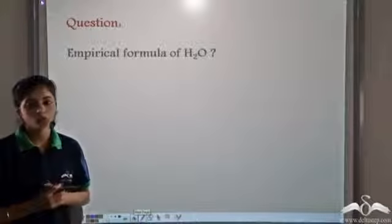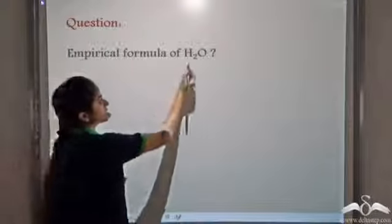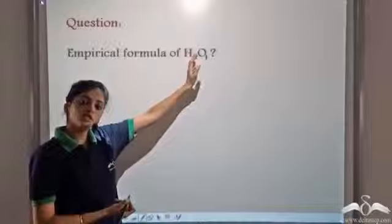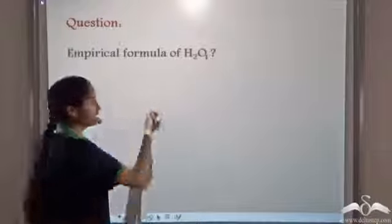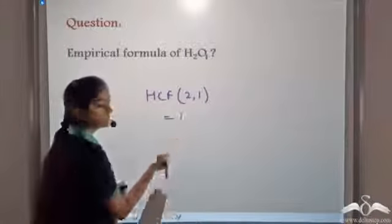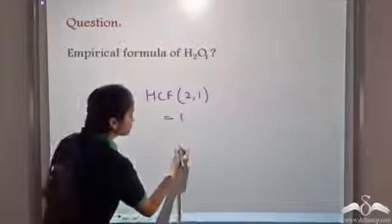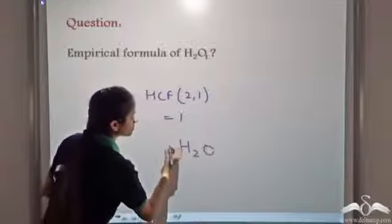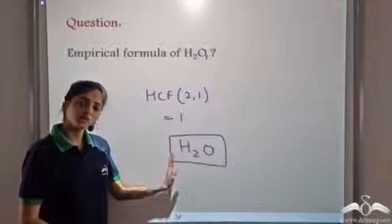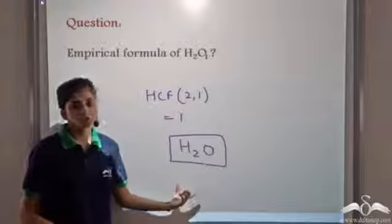What is the empirical formula of water, H2O? There are 2 hydrogen atoms and 1 oxygen atom. The HCF of 2 and 1 is 1, so dividing each by 1 leaves the numbers unchanged: we get H2O. The simplest ratio in which hydrogen and oxygen atoms are present is 2 is to 1, so the empirical formula of water is H2O.